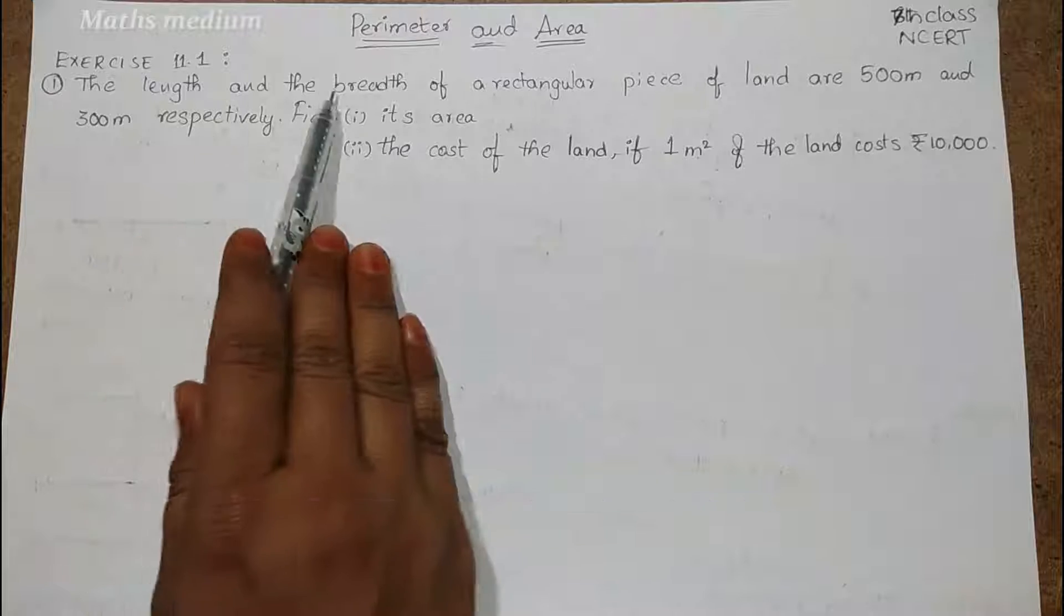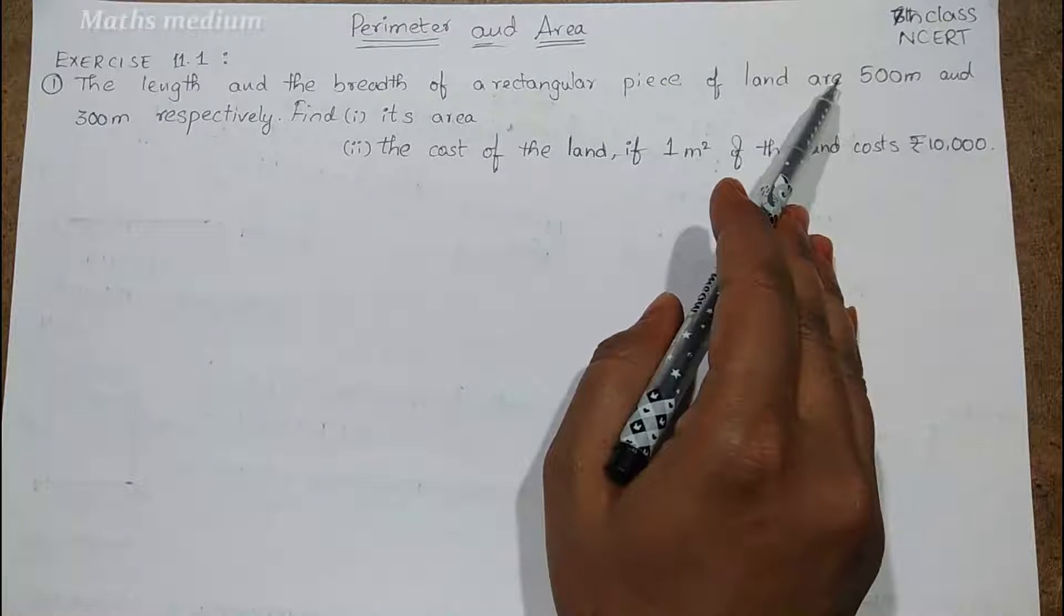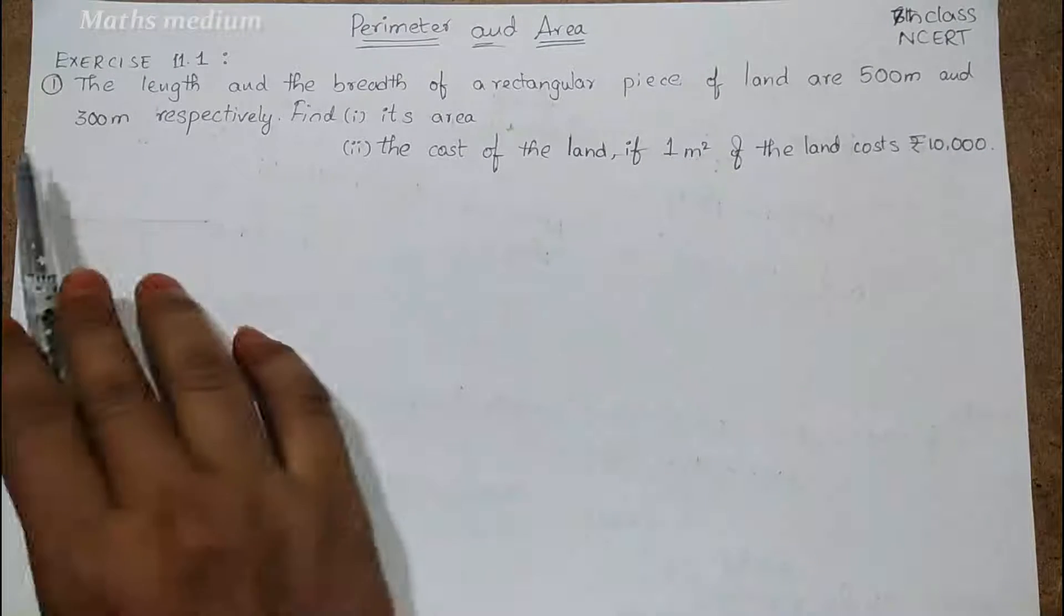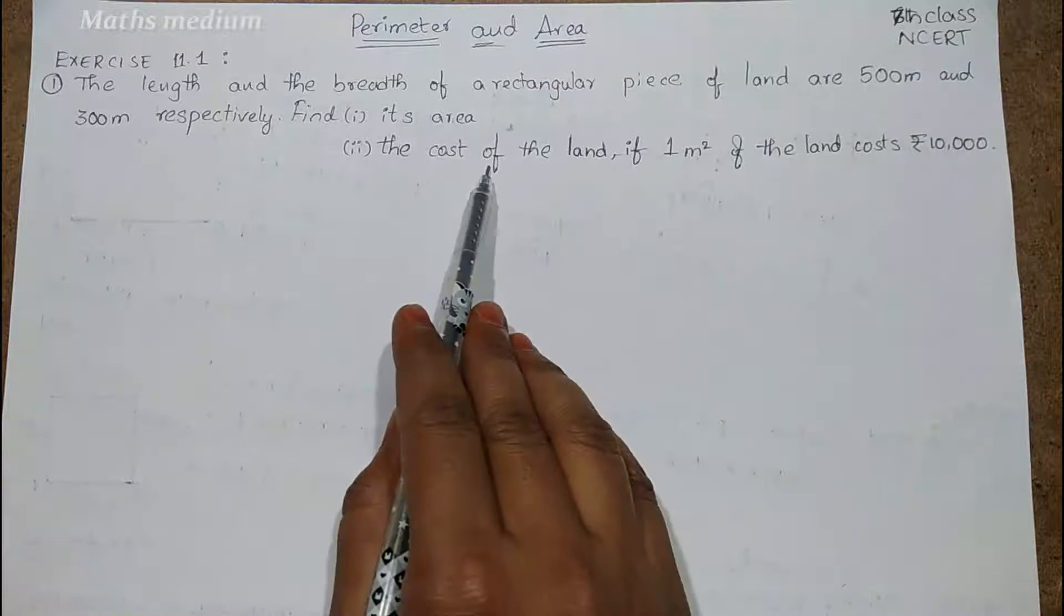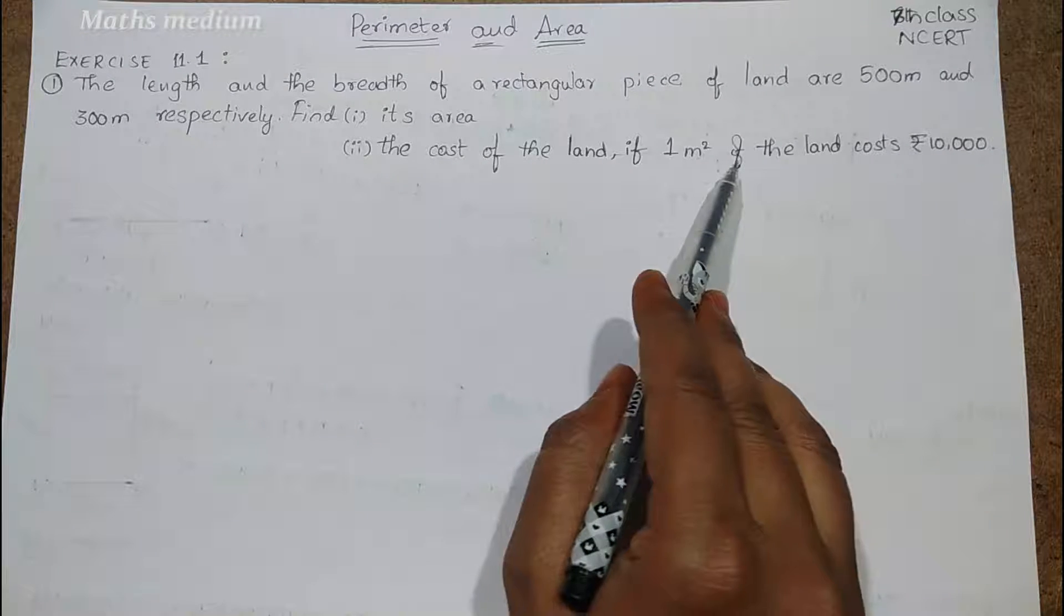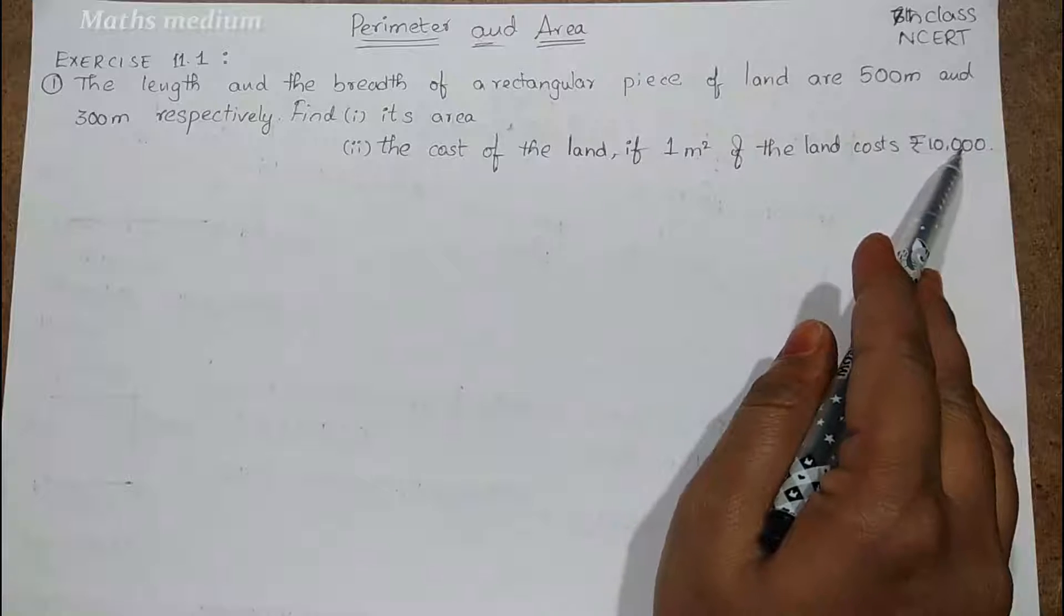The length and breadth of a rectangular piece of land are 500 meters and 300 meters respectively. Find its area and the cost of the land if 1 meter square of the land costs 10,000 rupees.